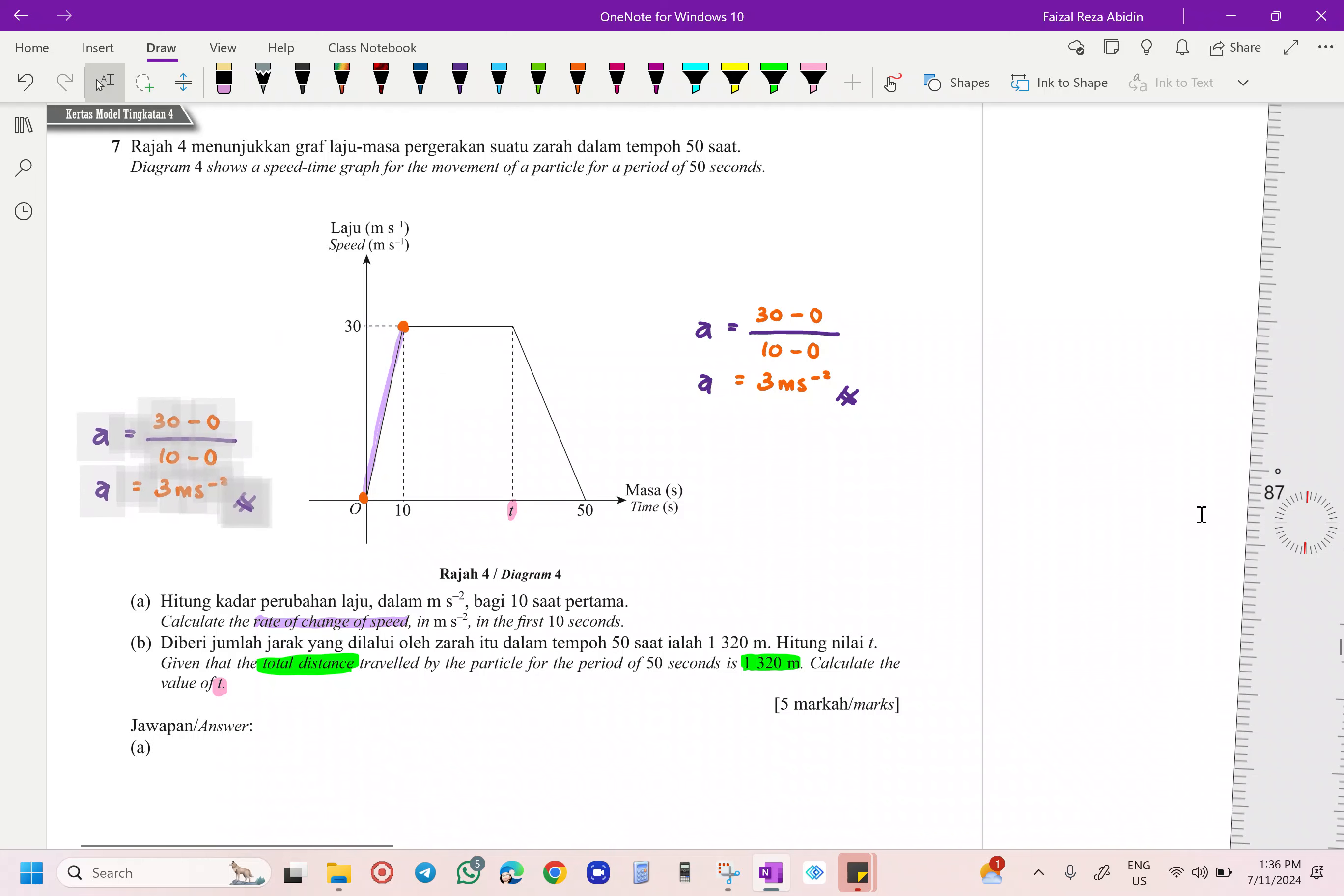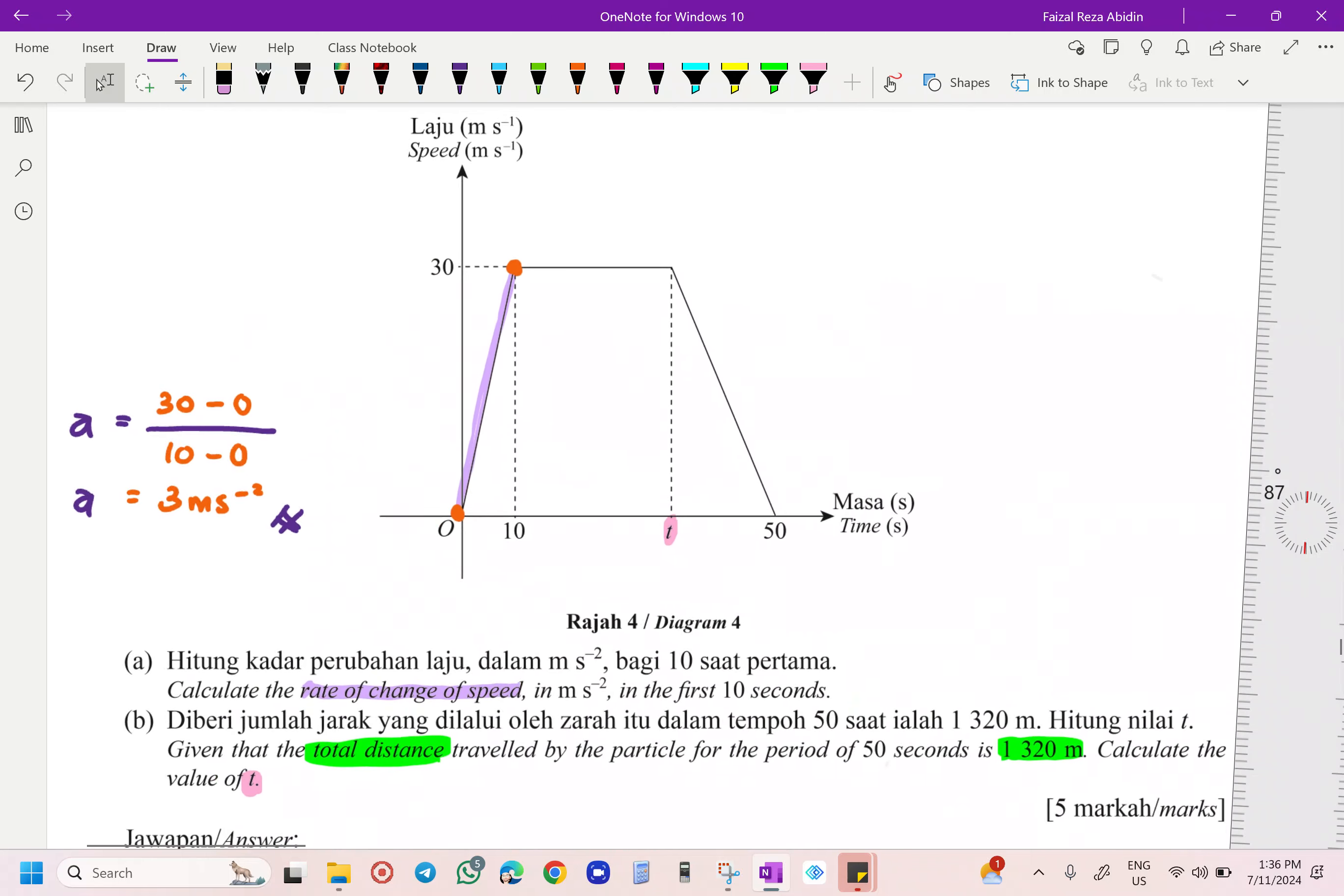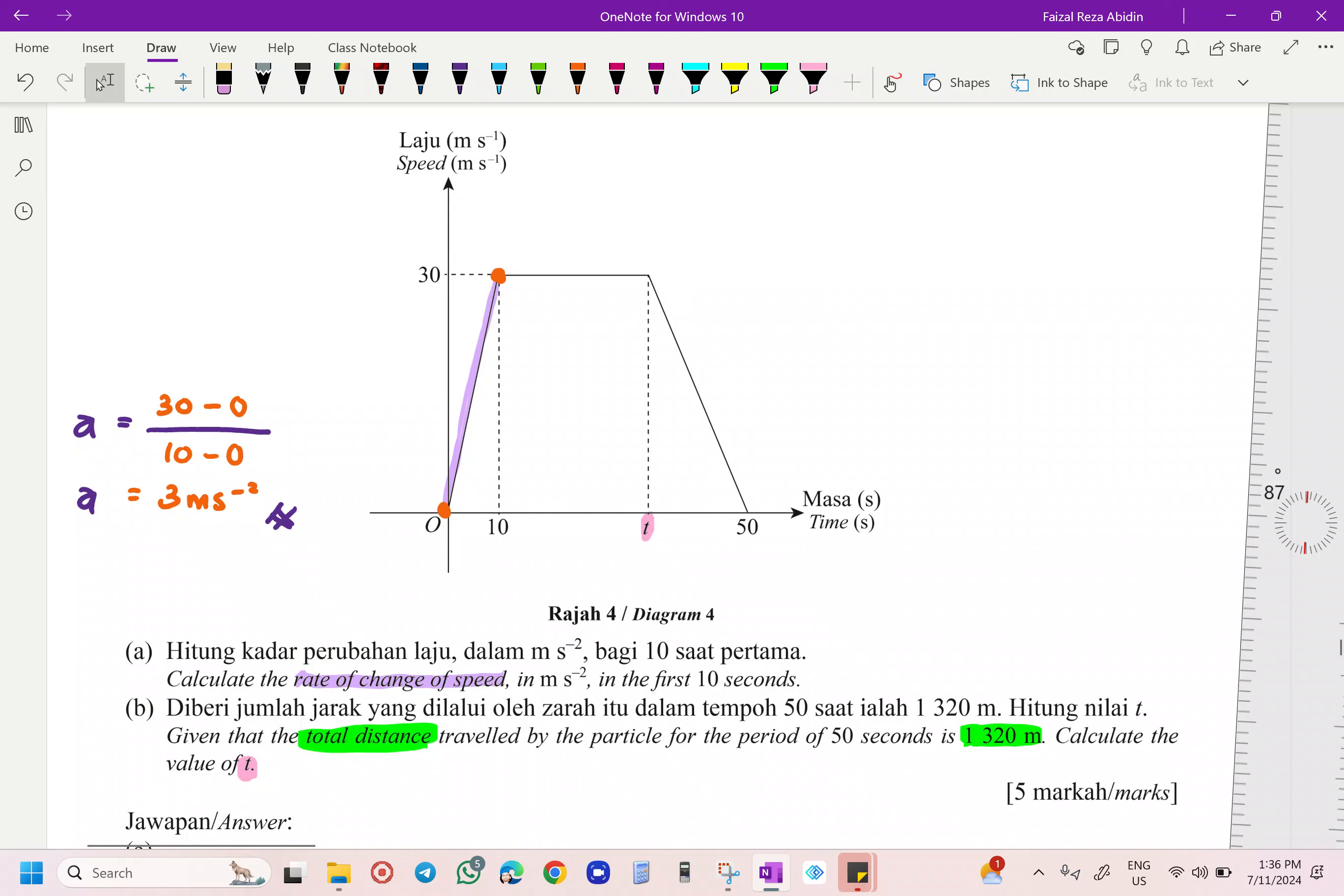This one for our A and K. So what happens over here, you are going to have three shapes. This one, one, your triangle. Okay, we are going to find the area of triangle. Then you are going to have your rectangle, and the other one going to be your another triangle there. Okay, so we are going to find the area.